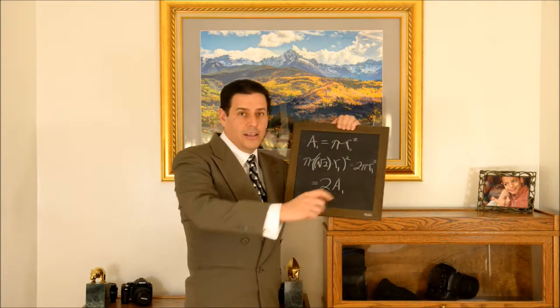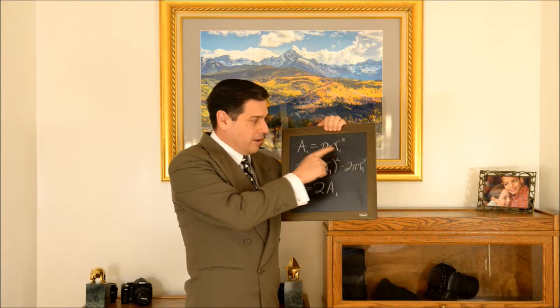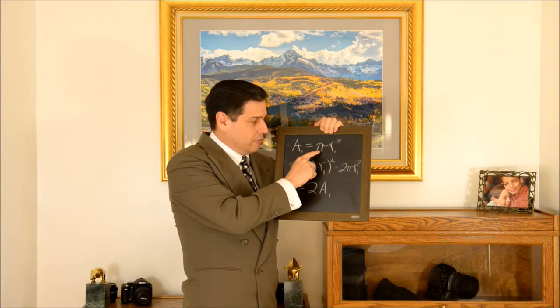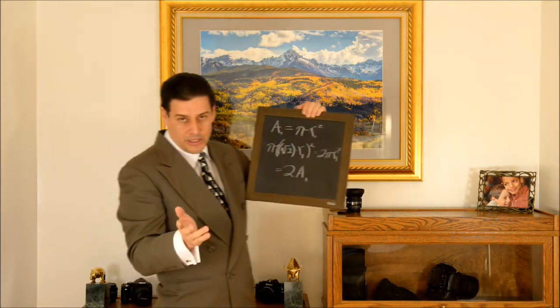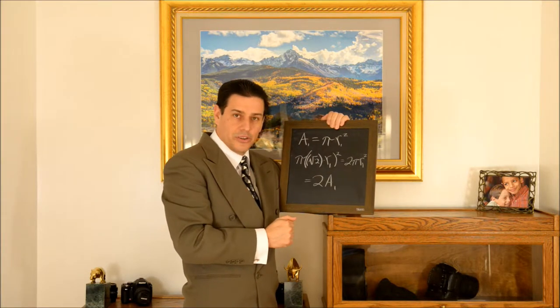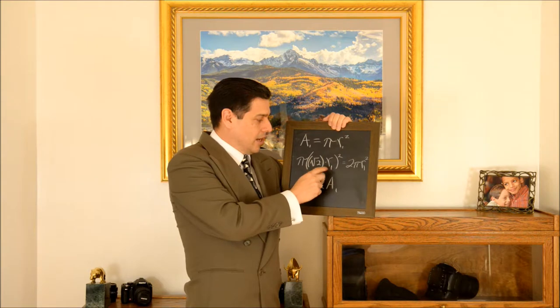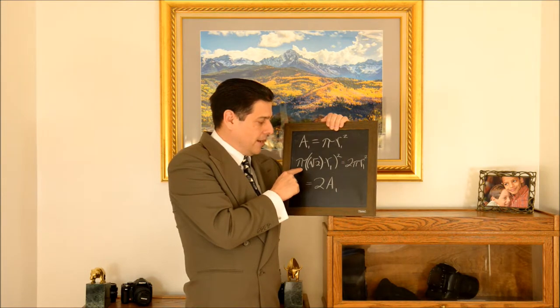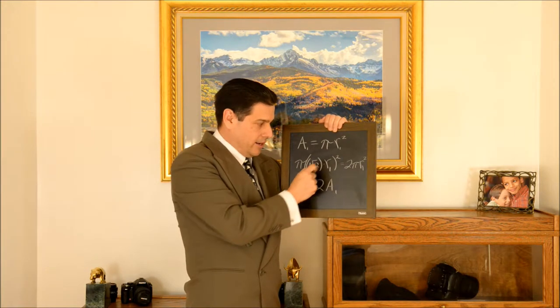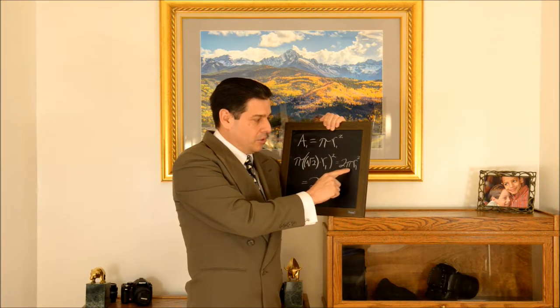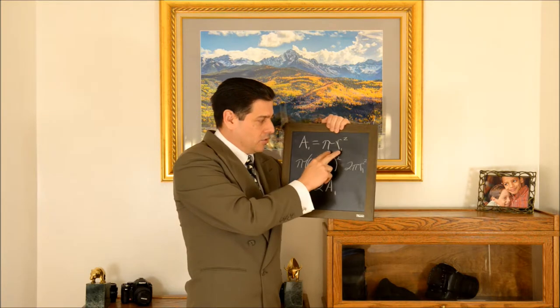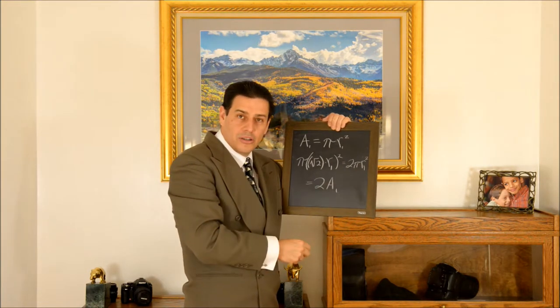What you actually want to do is double the area. How do you double the area? If you remember, the area of a circle is π r². So if I start off with some particular area A₁, that equals π r₁². I suggest multiplying r₁ by the square root of 2. π times this new radius squared comes out to 2π r₁², or in other words twice A₁. So multiplying the radius by √2 gives you twice the old area.